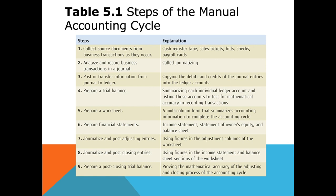For those doing manual accounting, here's a quick recap of the nine steps. Step one: source documents like payroll cards, receipts, and invoices. Step two: journalizing. Step four: verifying ledger account balances in the chart of accounts. You'd do your trial balance, then adjusting trial balance, then post-closing trial balance. The optional worksheet we didn't cover. Financial statements include the income statement (profit and loss), statement of owner's equity, and balance sheet. The last three steps are adjusting entries, closing entries, and post-closing trial balance.